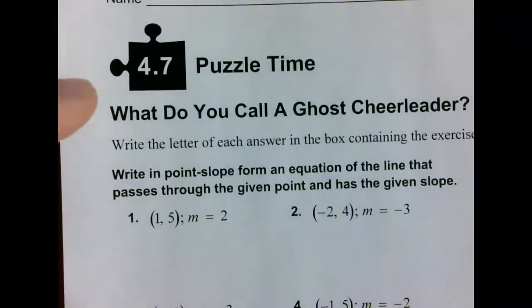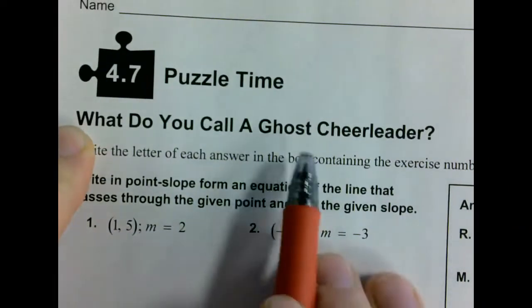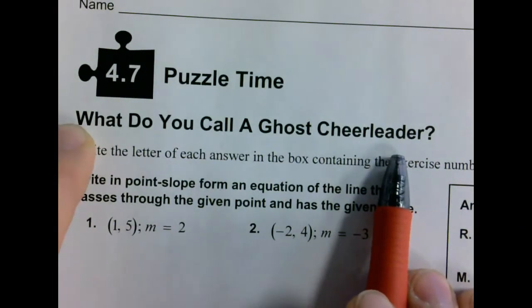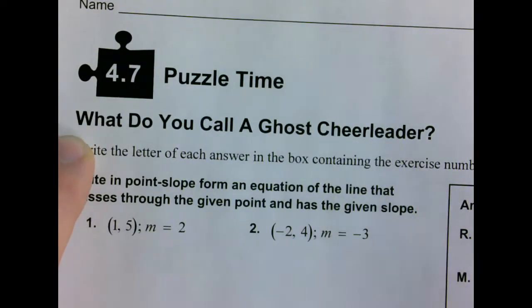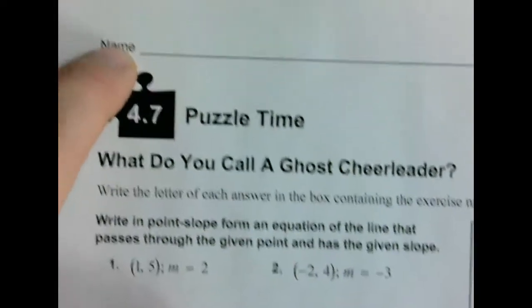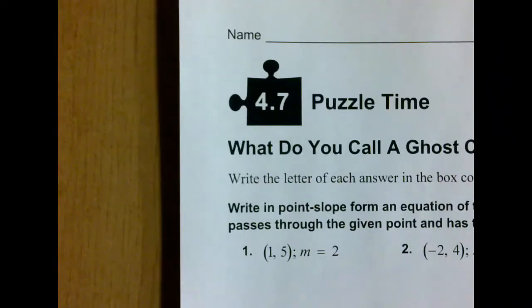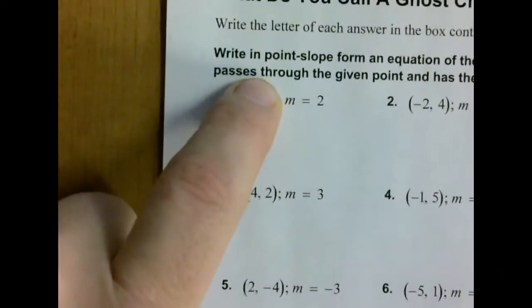The 4.7 puzzle worksheet. Remember there are two rules. What do you call a ghost cheerleader? Once you know the answer, don't shout it out. Someone might actually like to figure it out. And the second one, you must still show the work. So, name, important. Don't forget that. Otherwise, from there, let me click that so we can see better.